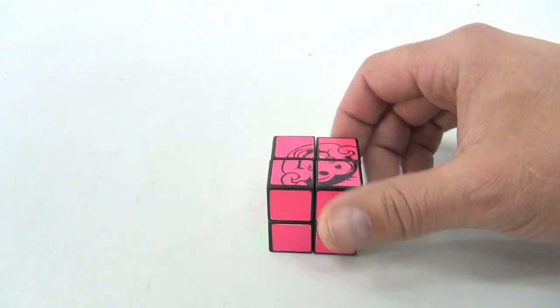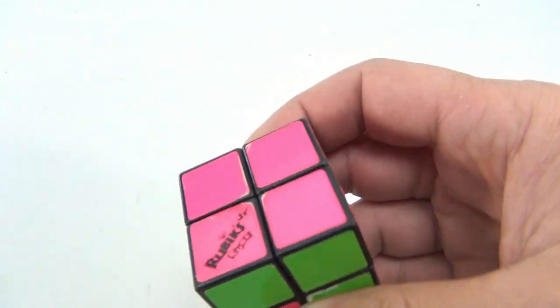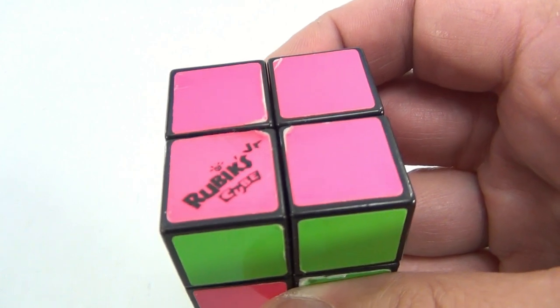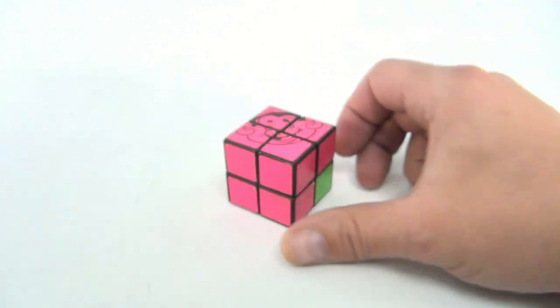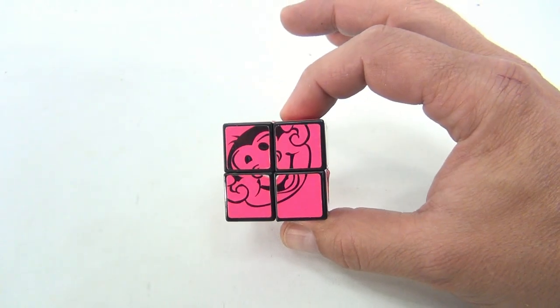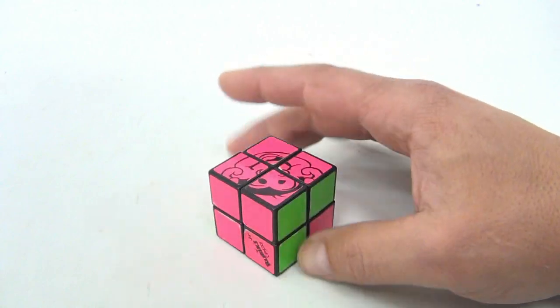Well, I haven't completely got it set right, but see it says Rubik's Cube Junior. So it's a junior cube 2x2, and the final picture is a monkey, but you're also supposed to have all the green together.